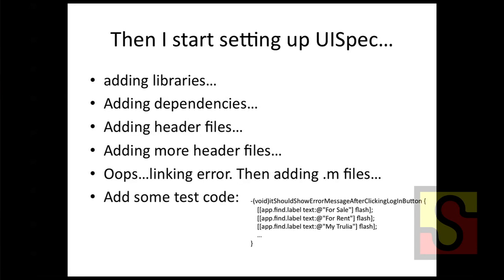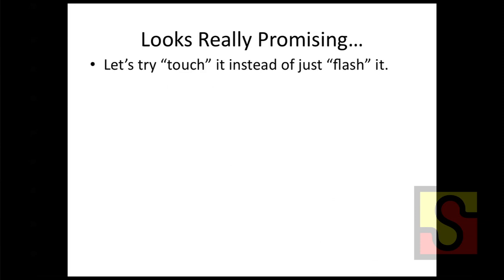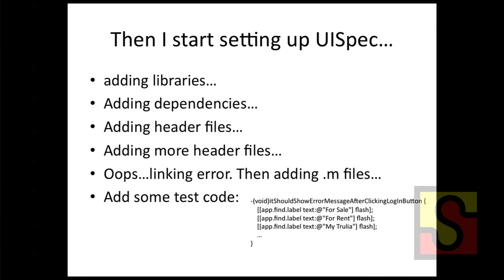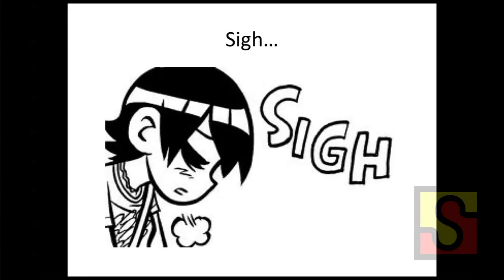UIAutomation from Instruments looks promising — really promising. If you look back, you'll see I had all these flashes. What happened is if you put that code in, on your phone the button itself flashes and you see, okay, seems okay. So I turned all the flash commands to touch — let's touch it and see what happened. But I hit another wall: either it results in no reaction, it's not doing anything, or I get this exact bad access error. So what should I do? Is there anything out there that just works out of the box?